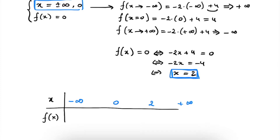For minus infinity, we know that we will get plus infinity — a very large positive number. For 0, we found that f of x will be 4. For x is equal to 2, we found that this is exactly the x where our function is 0, so where it crosses the x-axis. This means that at this point, our function will switch signs. And then for plus infinity, we know that our function will return a very large negative number.